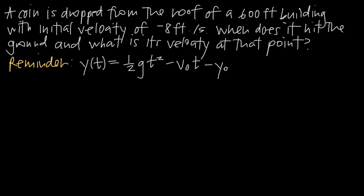In this video, we're doing another vertical motion problem. In this particular problem, we've been told that a coin is dropped from the roof of a 600-foot tall building with an initial velocity of negative 8 feet per second. Remember that this negative value indicates that the coin is falling toward the ground.